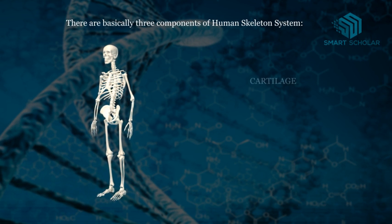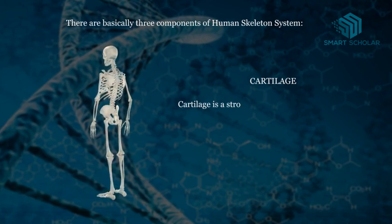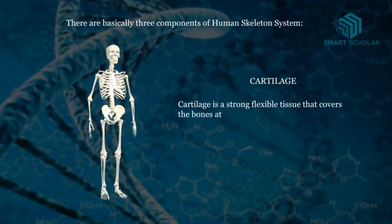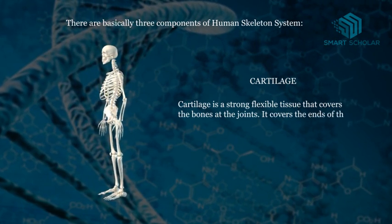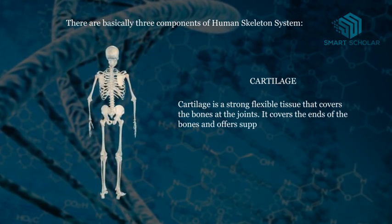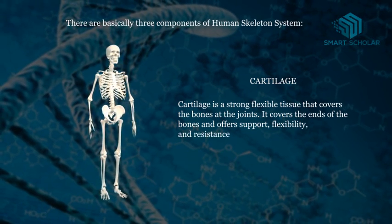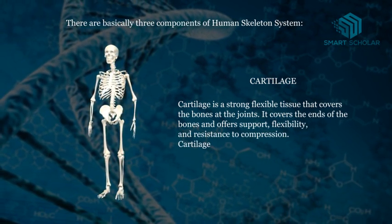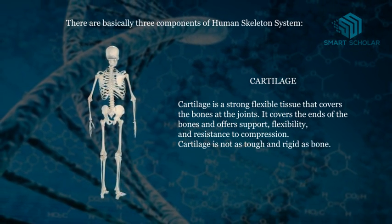Now let's learn about cartilage. Cartilage is a strong flexible tissue that covers the bone at the joints. It covers the end of the bones and offers support, flexibility and resistance to compression. Cartilage is not as tough and rigid as bone.